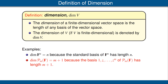For our second example, fix a positive integer m and consider all polynomials with coefficients in F and degree less than or equal to m. A basis of this vector space is 1, z, up to z to the m. That basis has length m plus 1, and thus the dimension of Pₘ(F) is equal to m plus 1.